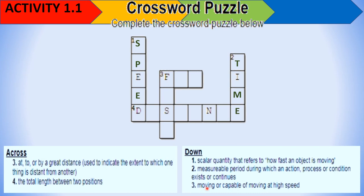Number 3 down: 'moving or capable of moving at high speed' — that is fast. Number 3 across: 'at or by a great distance' — that is far. Number 4 across: 'the total length between two positions' — that is distance.